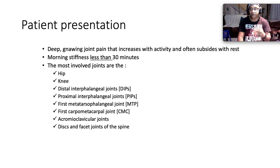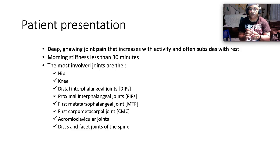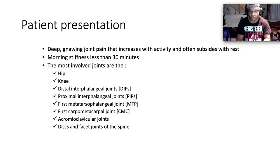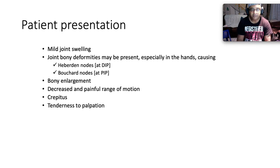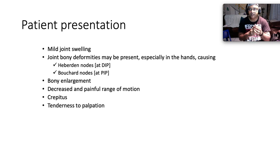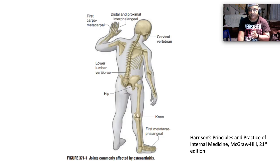The most involved joints are the hip, the knees, the distal interphalangeal joints, the proximal interphalangeal joints, the first metatarsophalangeal joint, the first carpometacarpal joint — often causing squaring of the thumb — acromioclavicular joints, and discs and facet joints of the spine. Patients present with mild joint swelling, bony deformities especially in the hands, causing Heberden's nodes at the DIP and Bouchard's nodes at the PIP, diminished and painful range of motion, crepitus, and tenderness on palpation.